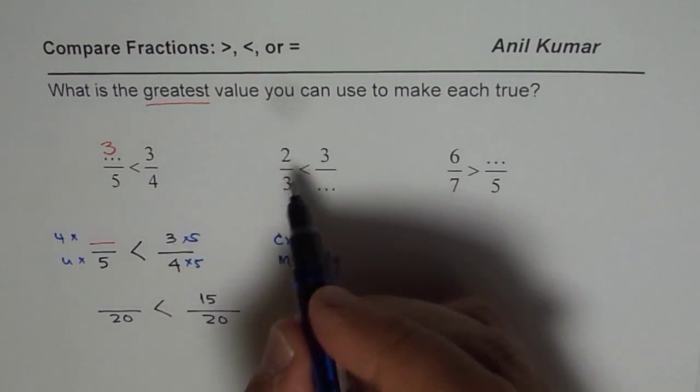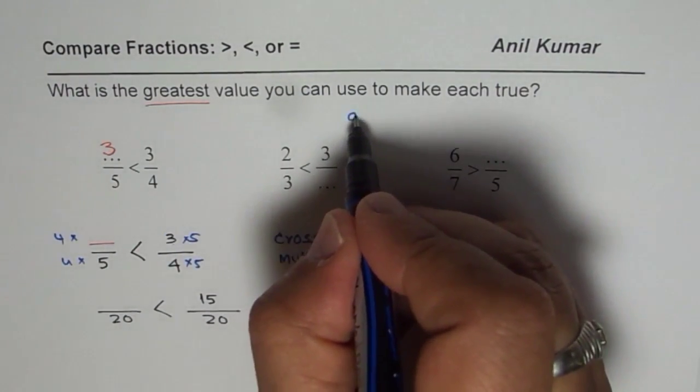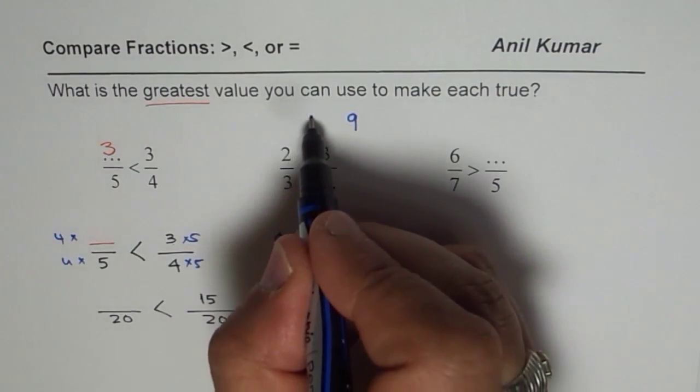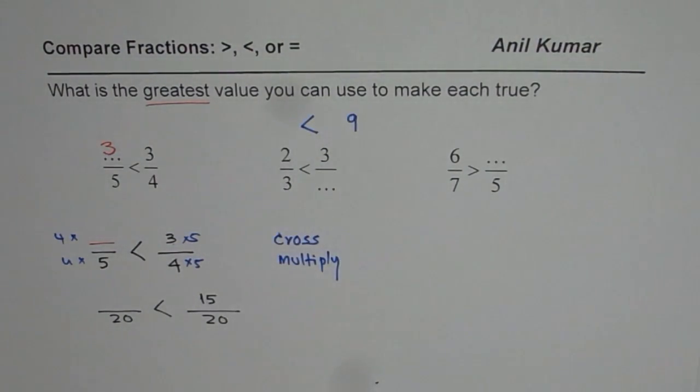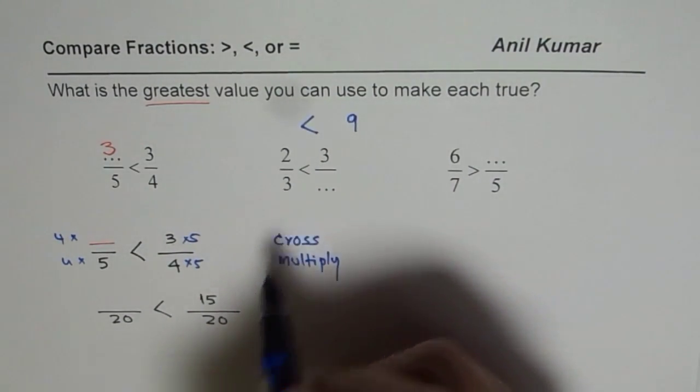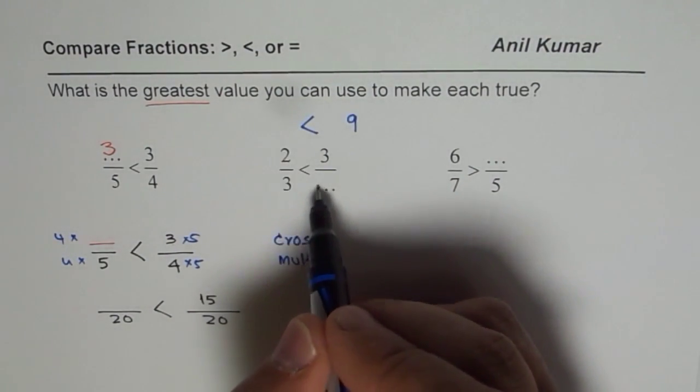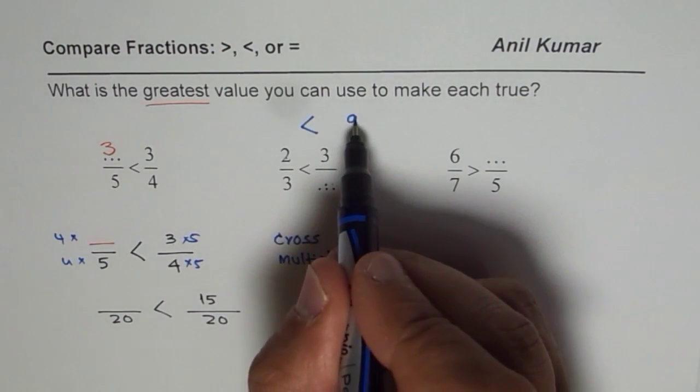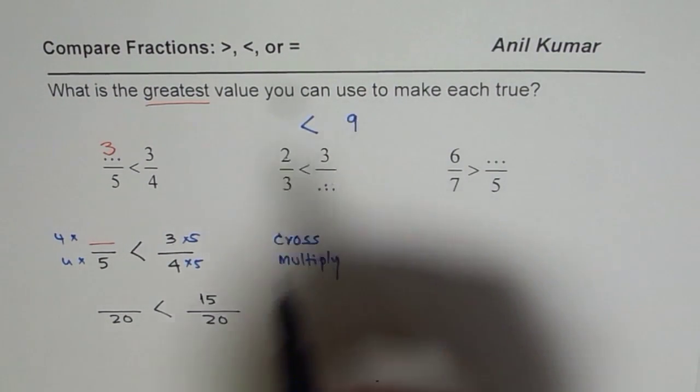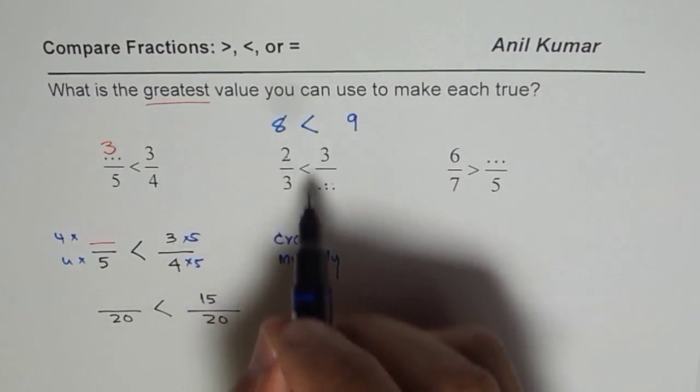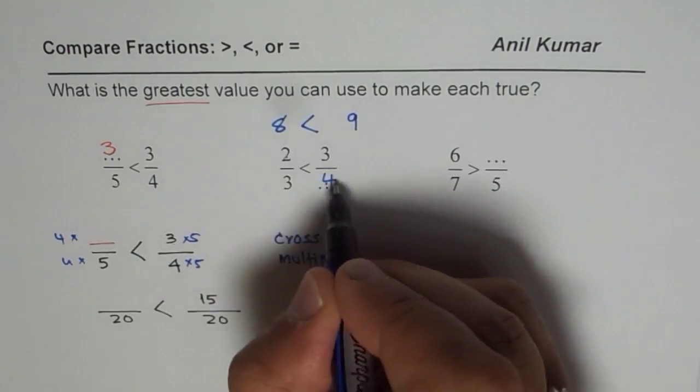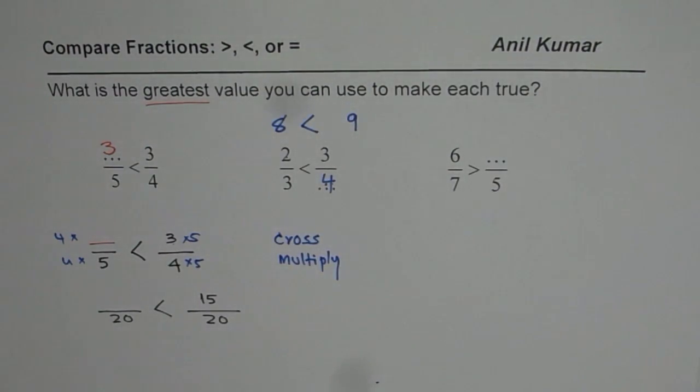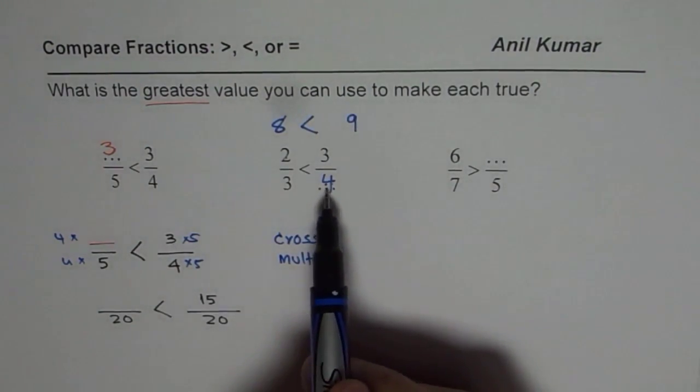So if I cross multiply, 3 times 3 is 9, do you see that? And something, and we want 9, should be greater than 2 times something. So the number here has to be less than 9. So 2 times what is less than 9? Highest value should be 8, for example. How do you get 8? You get 8 by multiplying 2 by 4. Do you get the idea? So that cross multiply helps. So that something should be 4.